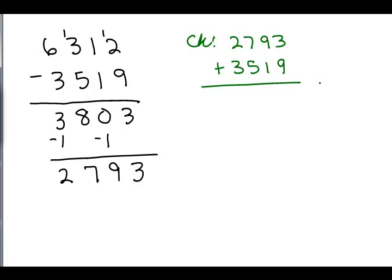On another video, I showed you how to add going from left to right. 2 and 3 is 5, 7 and 5 is 12. I'm just going to write the 12 like this, 9 and 1 is 10. I'm just going to write the 10 like this, and then 3 and 9 is 12. And I have 6312, and that was the original number up here, so that means this is correct.